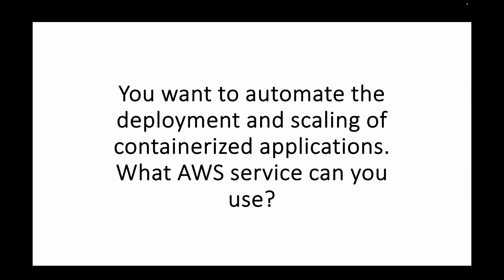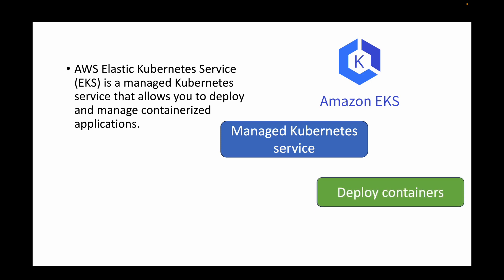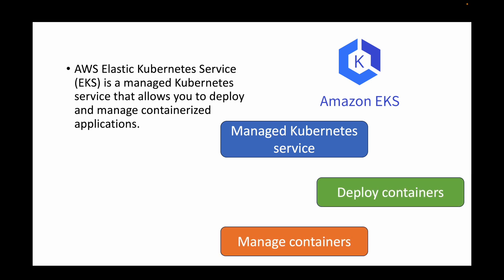The next question is: you want to automate the deployment and scaling of containerized applications. Which service can you use in AWS? In AWS, whenever we talk about running containerized applications, we have two main services: Amazon ECS (Elastic Container Service) and Amazon EKS (Elastic Kubernetes Service). EKS is a fully managed AWS service that helps you deploy containerized applications. You can set up a cluster and deploy your containers on it using the EKS service.